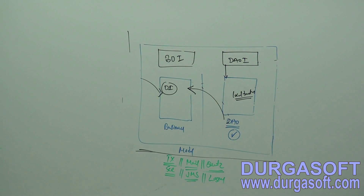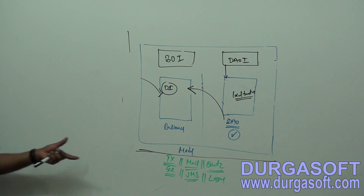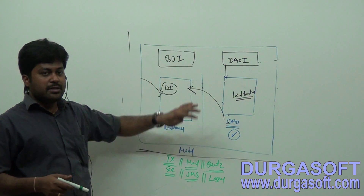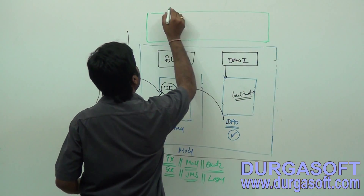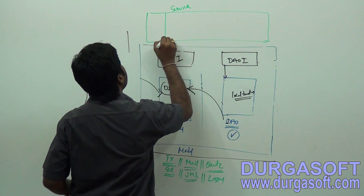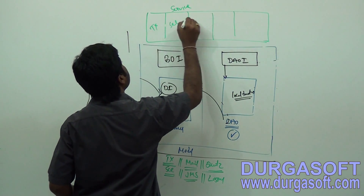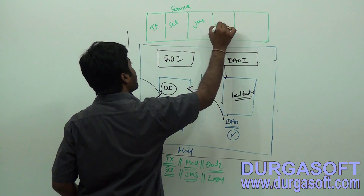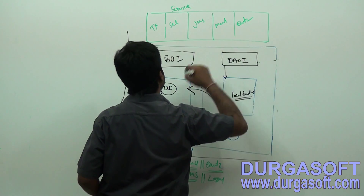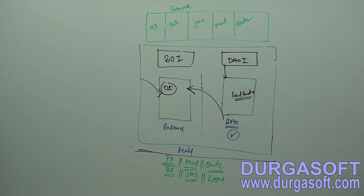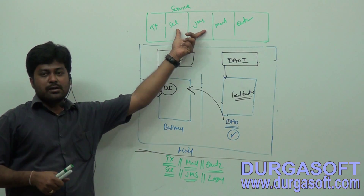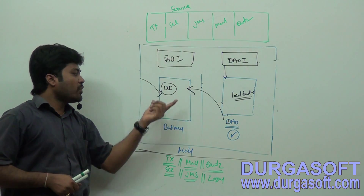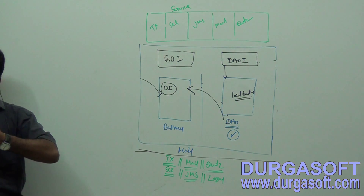This services code we should not write inside business. As per MVC, services code also we need to write separately. We need to follow standards here. This services code separately we need to write under the services layer. We can implement the services — we know how to implement. We can implement services by using the Spring API. These Spring API implemented services, if you want to use for your business part, means if you want to include them along with your business execution.